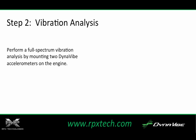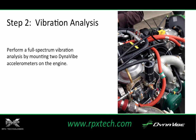Position two Dynavibe accelerometers to measure the vibration frequencies. In this picture, one is mounted on the right carburetor, and the second is mounted above the crankshaft near the front of the engine to measure propeller vibration. These mounting locations allow the accelerometers to record different kinds of vibrations — prop and torsional. With the accelerometers in place, collect data using the Dynavibe GX2 while the engine is running and exhibiting the vibration.